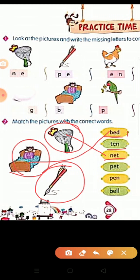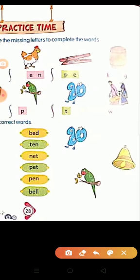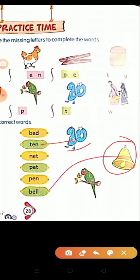So where is pen? Bed matching ho gai, T, E, N, ten, N, E, T, net, P, E, T, pet, P, E, N, pen. Good. Pen ki matching pen se. T, E, N, ten, so where is ten? Ten ki matching ten se. Next, B, E, L, L, bell. Bell ki matching bell se. Next is pet. P, E, T, pet. Yes, this is pet. Pet ki matching pet se.